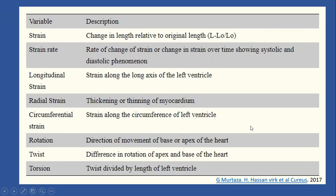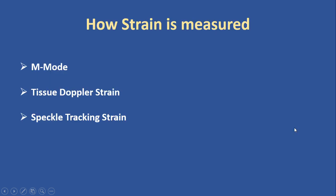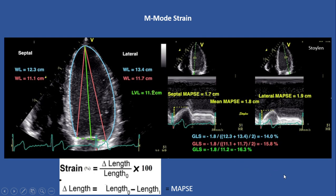Here are the definitions and abbreviations used in strain study. Now let's see how strain is measured. We have three ways to measure strain: M-mode, tissue Doppler, and speckle tracking. Let's start with M-mode strain.